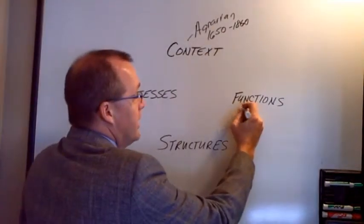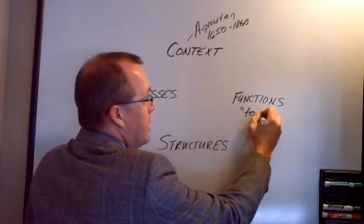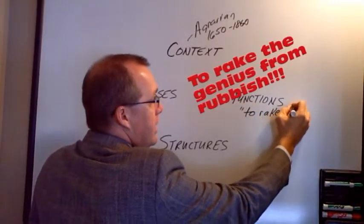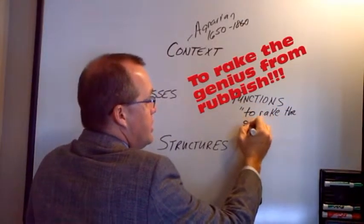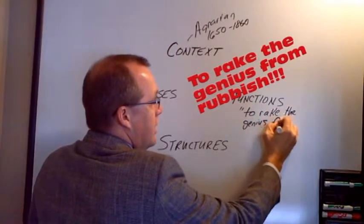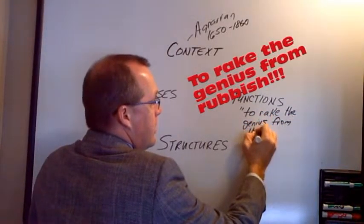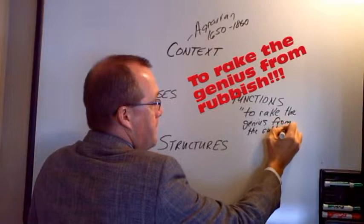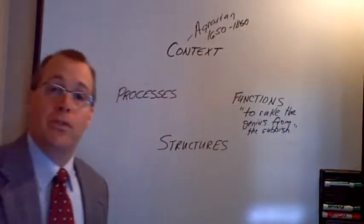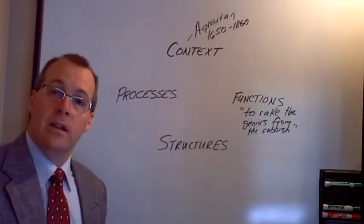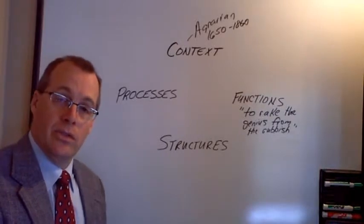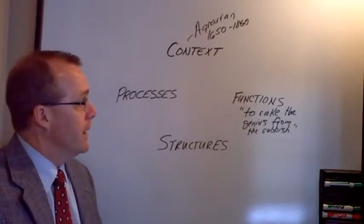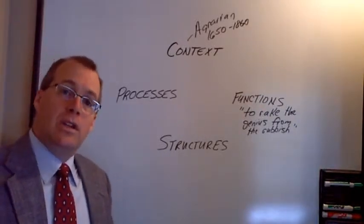And so as he looked out, he crafted the vision for education, which is the purpose of education. And in 1784, he said the purpose of education was to rake the genius from the rubbish. Harsh words for our time, but it's exactly in the Notes on the State of Virginia, 1784.